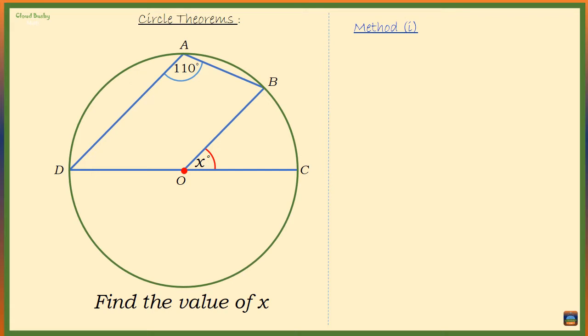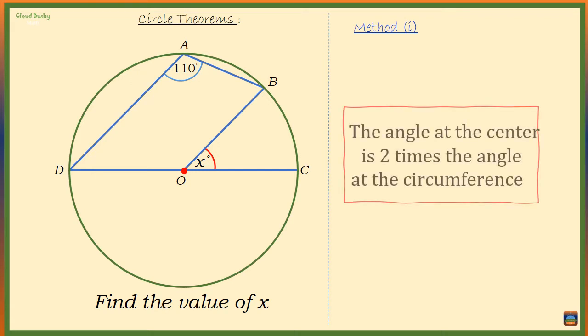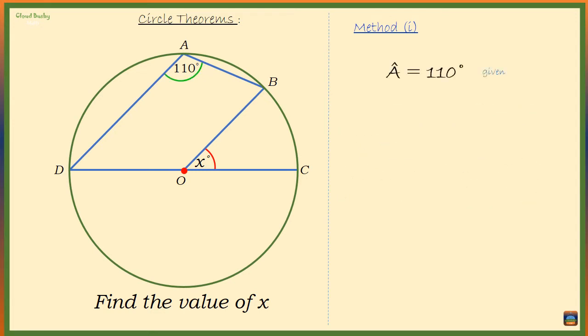We know that the angle at the center of a circle is double the angle at the circumference. Since angle A is at the circumference and is given as 110 degrees, it means that angle DOB at the center of the circle is 2 times 110 degrees, that is 220 degrees.